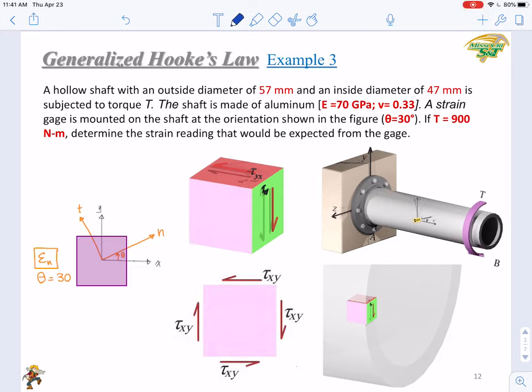A hollow shaft with an outside diameter of 57 mm and inside diameter of 47 mm is subjected to a torque T. The shaft is made of aluminum with E equals 70 GPa and nu equals 0.33. A strain gauge is mounted on the shaft at the orientation shown in the figure with theta equals 30 degrees with respect to the axial direction. If the torque is 900 N·m, determine the strain reading that would be expected from the gauge.